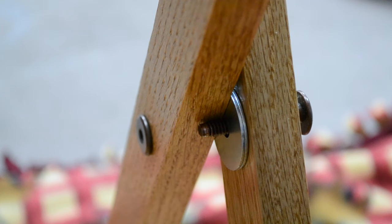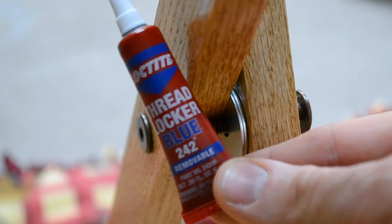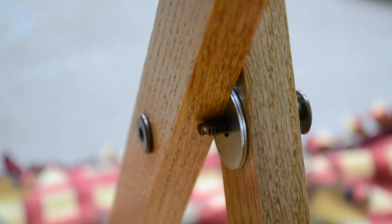So another step that I like to do when it comes to reassembling the tray for the final time, is I like to use some thread locker, right here I got the thread locker blue 242, just to put on the threads to ensure that the tray is not going to loosen up over time. It will help hold it nice and tight.